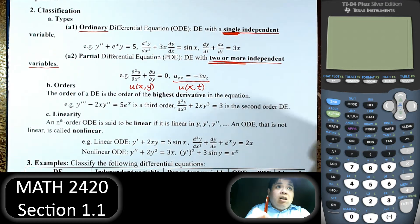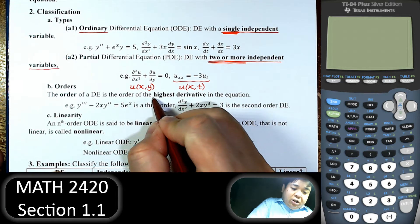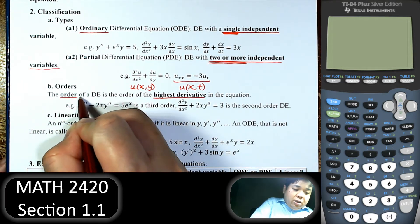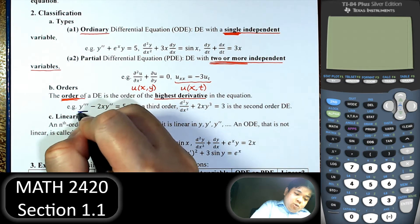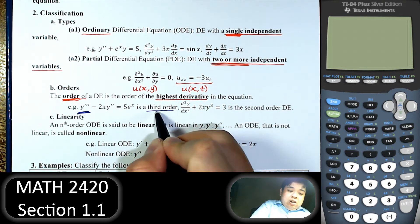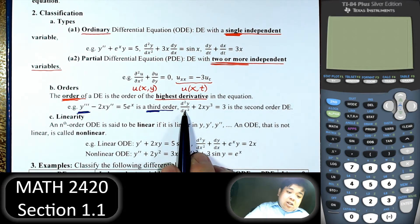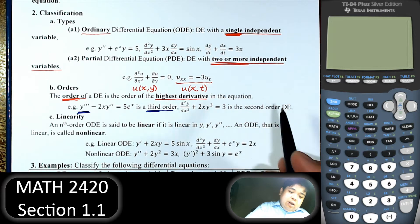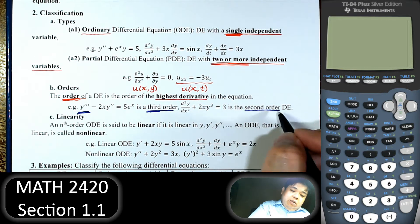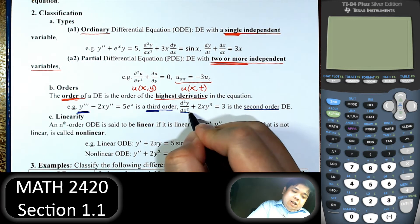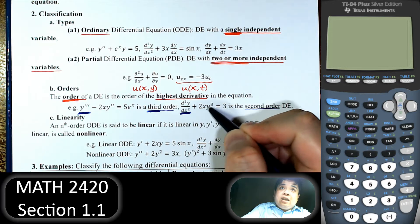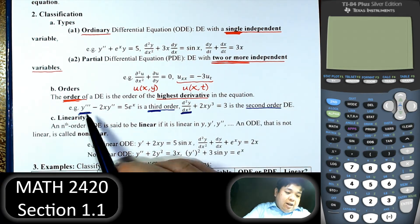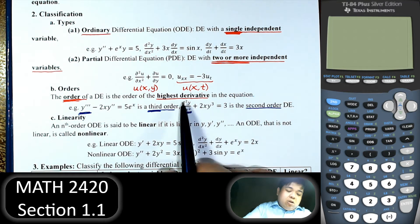Next we can classify differential equations by order. The order is the order of the highest derivative in the equation. So this one has the third derivative as the highest — we call that a third order equation. This one has the second derivative as the highest — we call that a second order differential equation. We are not focused on the power of y here; that's irrelevant. We're talking about the order of the derivative.